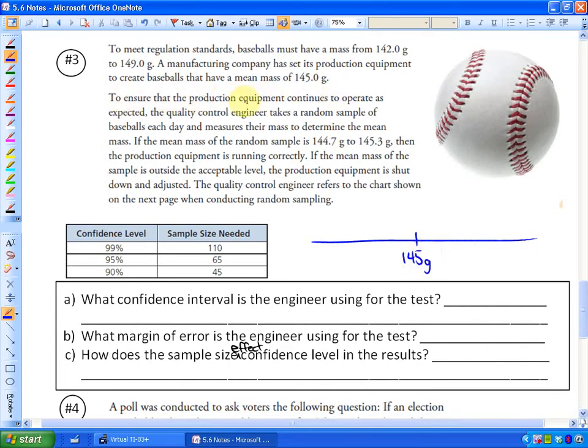To ensure that the production equipment continues to operate as expected, the quality control engineer takes a random sample of baseballs each day and measures their mass to determine the mean mass. If the mean mass of the random samples is between 144.7 and 145.3, then the production equipment is running correctly. If the mean mass of the sample is outside the acceptable level, so if its average is outside of 144.7 to 145.3, the production equipment is shut down and adjusted. The quality control engineer refers to the chart shown on the next page when conducting random sampling. Here's the chart.